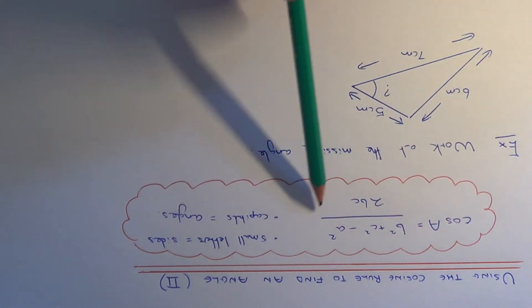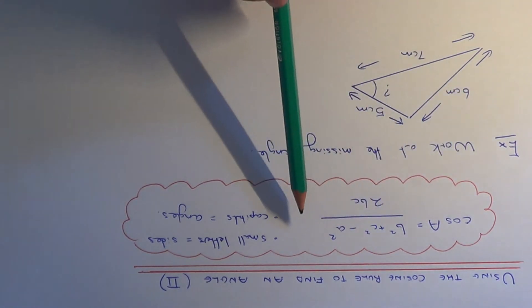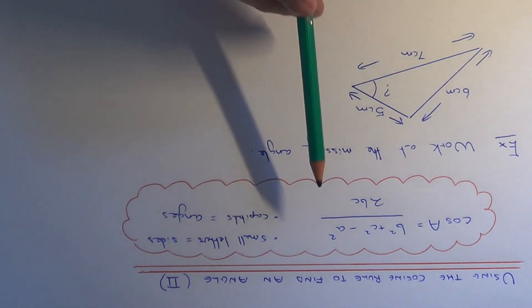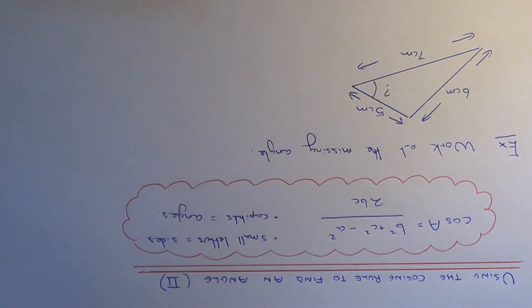This formula here I have rearranged to make cos A the subject as this formula here is much easier to use than the original cosine rule formula. I have made a video on how to make cos A the subject so feel free to watch that one as well.